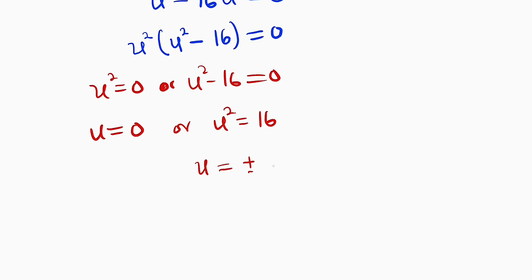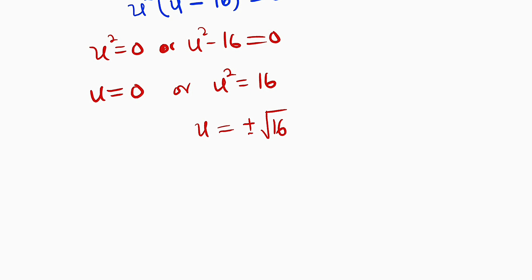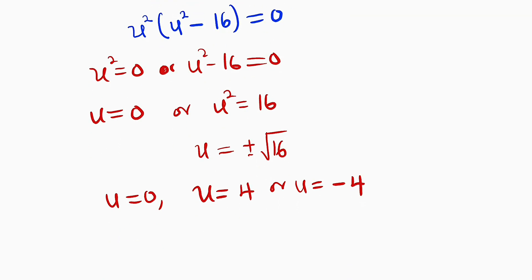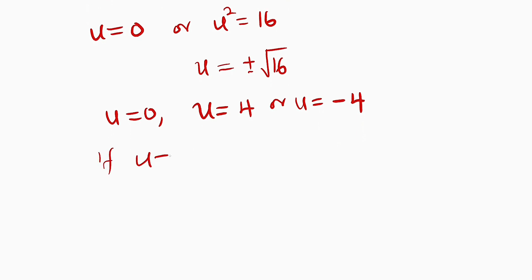So u equals plus or minus the square root of 16. I didn't apply plus or minus for u = 0 because negative 0 is 0 and positive 0 is still 0. The square root of 16 is 4, so u could be positive 4 or negative 4. Now that we have three values of u — 0, 4, and negative 4 — we substitute them back where we defined u equal to x plus 5.